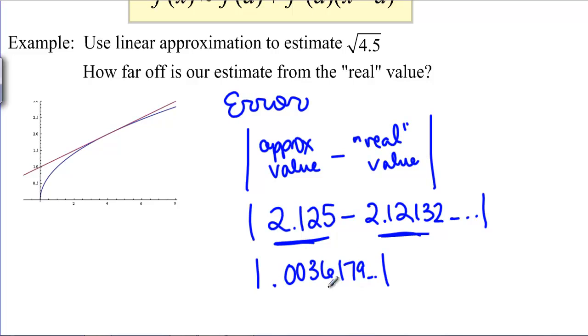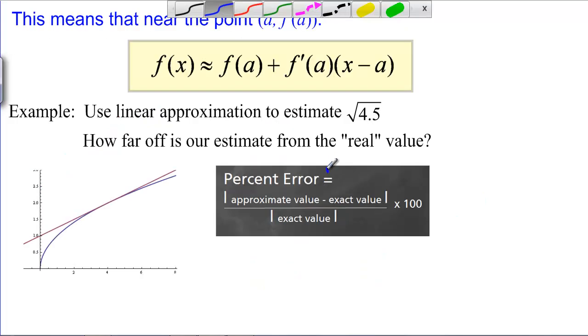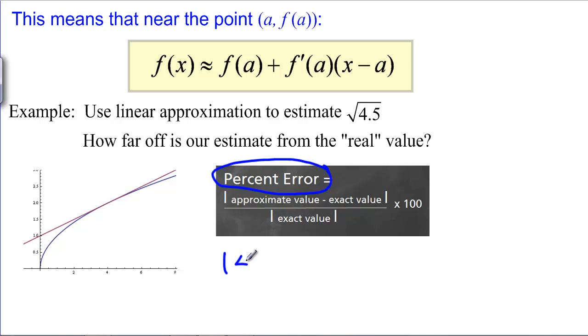That tells us we weren't that far off with our error but if we wanted to know if this number was meaningful or not, it kind of depends on the magnitude, how big the answers are. We're going to define something called percent error. This is just going to take into account how big our actual number is. We're going to do what we just did before, approximate value minus exact value. Here it would be 2.125, that's 2 and 1 eighth, minus the exact value of square root of 4.5, whatever the calculator says there, divided by the exact value and absolute value, so absolute value of square root of 4.5 times 100.